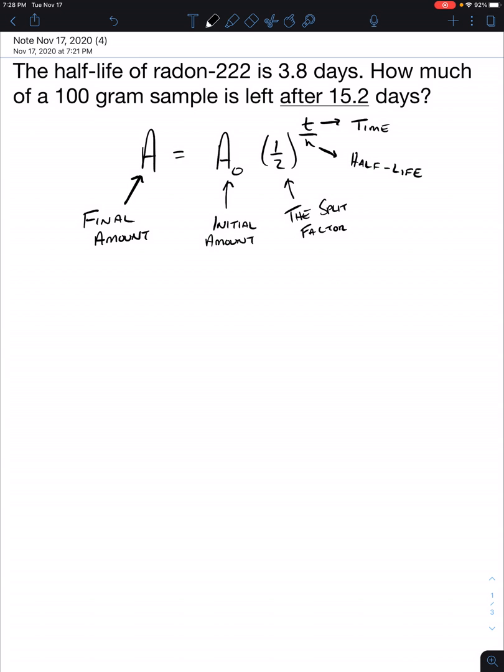We know that 3.8 is going to be our h variable. How much of a 100 gram sample is left after 15.2 days? 100 gram sample is our initial amount, we're solving for our final amount after 15.2 days.